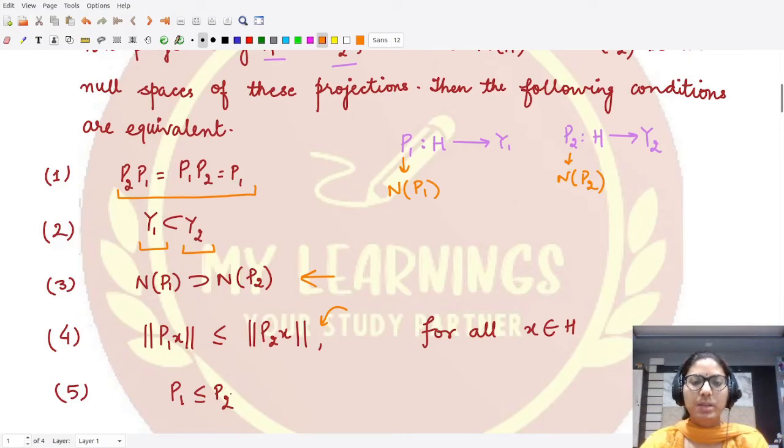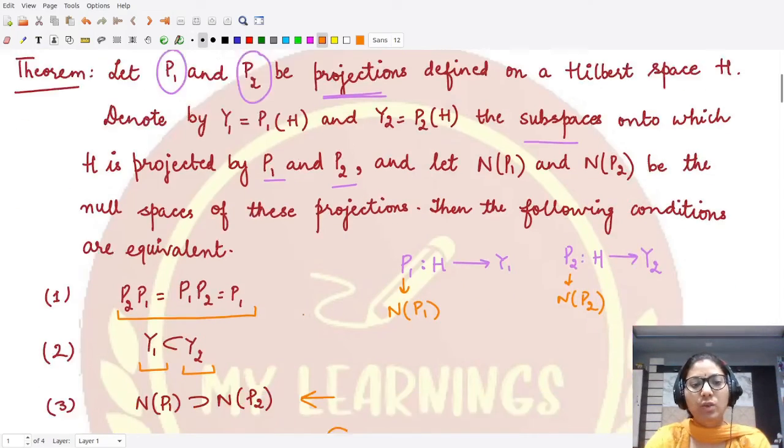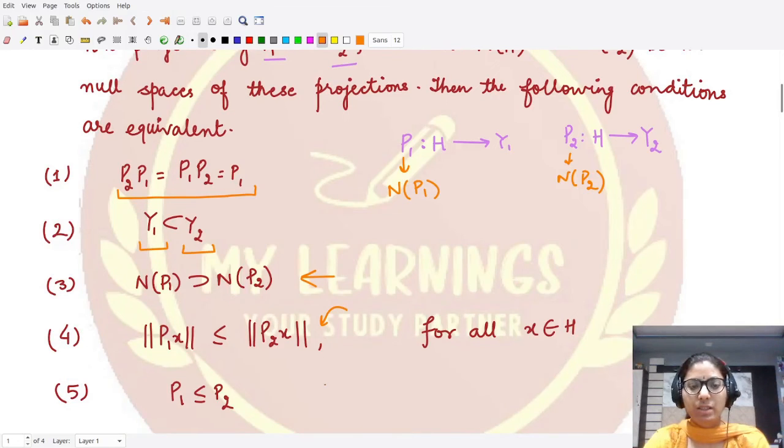This is quite an important result. Why? Because whenever you have any of these five conditions, or you are given P₁ and P₂ are projections, then you could use any other four among these results.